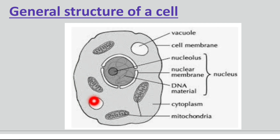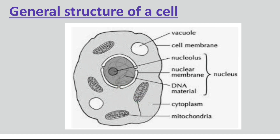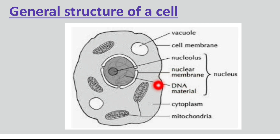Next is cytoplasm. It is mainly composed of water, salt, and protein. The most important thing about cytoplasm is that all the organelles — like vacuoles, mitochondria, etc. — are situated in the cytoplasm. The third part is the nucleus, which is the most condensed part of the cell. It contains chromosomes, which are the DNA material, and also has a nucleolus.